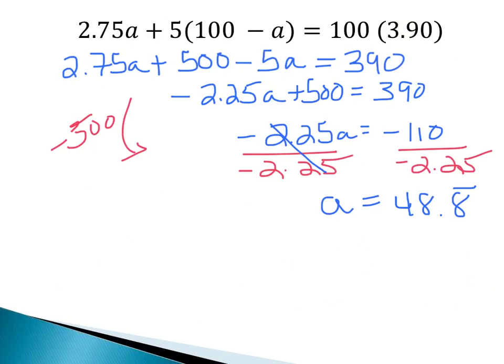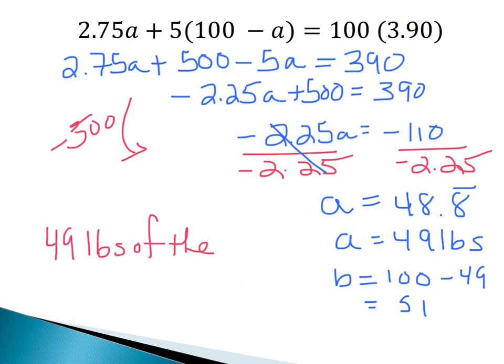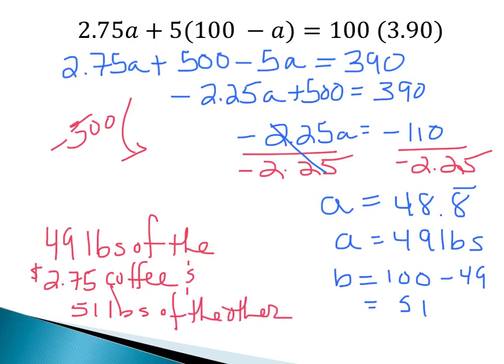Now the problem asked us to give the coffee to the nearest pound, and so 48.8 rounded is 49, so we know we're going to have 49 pounds of that. And then B is 100 minus A, so that's 100 minus 49, which gives you 51. So our final answer is, we're going to have 49 pounds of the $2.75 coffee, and 51 pounds of the other. And that's your final answer.